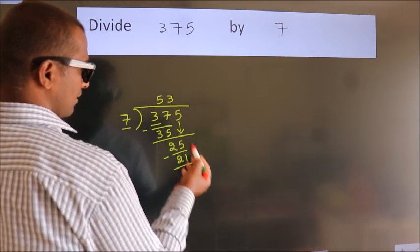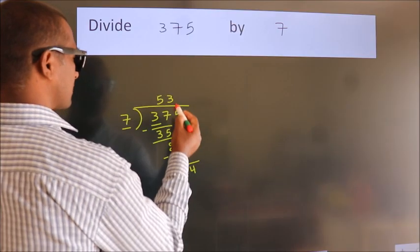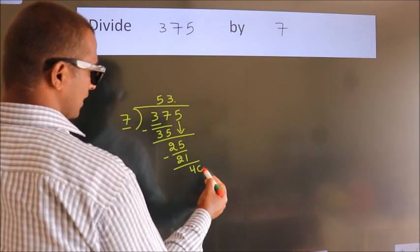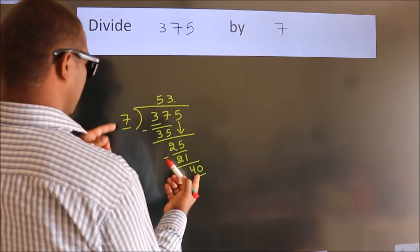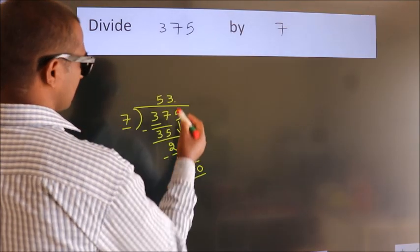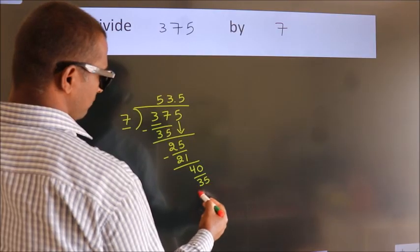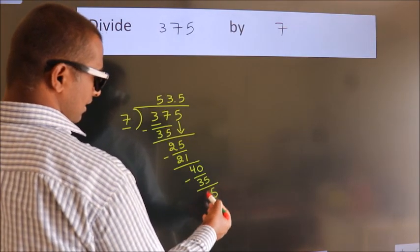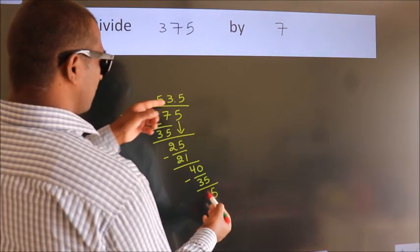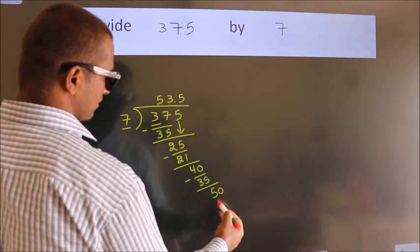After this, no more numbers to bring down. We subtract and get 5. After this, we already have the decimal, so directly take 0. So 50.